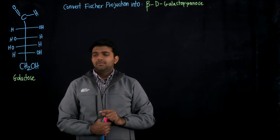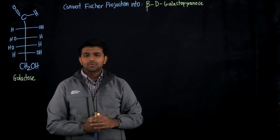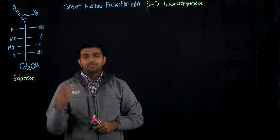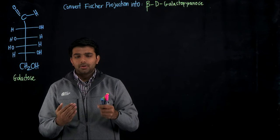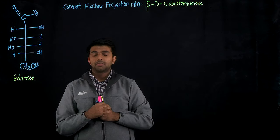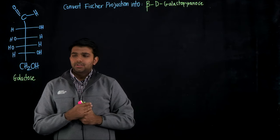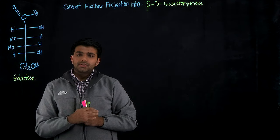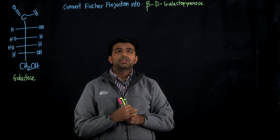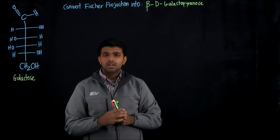Today we're going to be converting Fischer diagrams to Haworth projections. It is expected that you're able to convert Fischer into Haworth, Haworth to chair conformations, and vice versa. We're going to start off with a Fischer projection of the sugar galactose, and the directions are to convert it into a beta-D-galactopyranose.